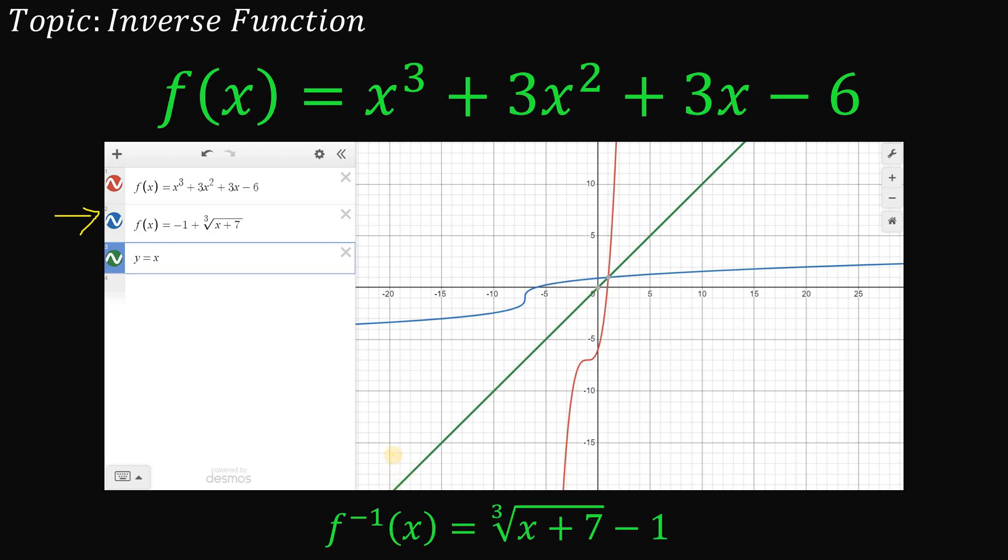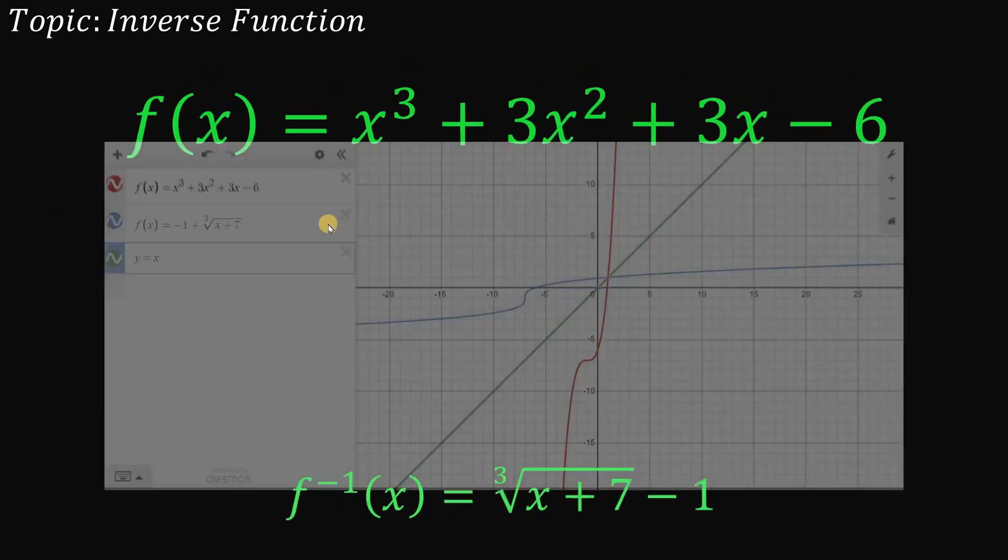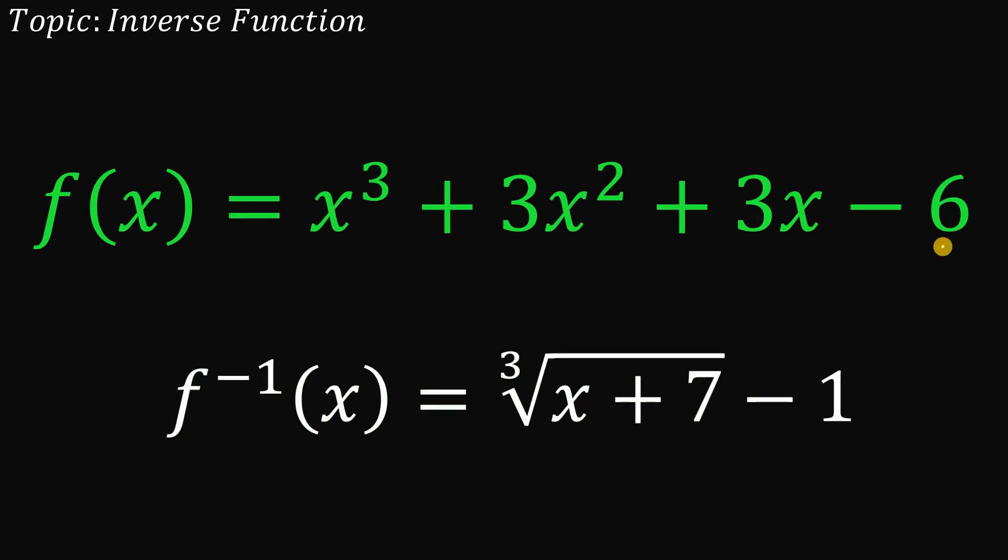Therefore, our answer to this question, what is the inverse of f(x) = x³ + 3x² + 3x - 6? And our answer is cube root of x + 7 minus 1. And as always, we are done.